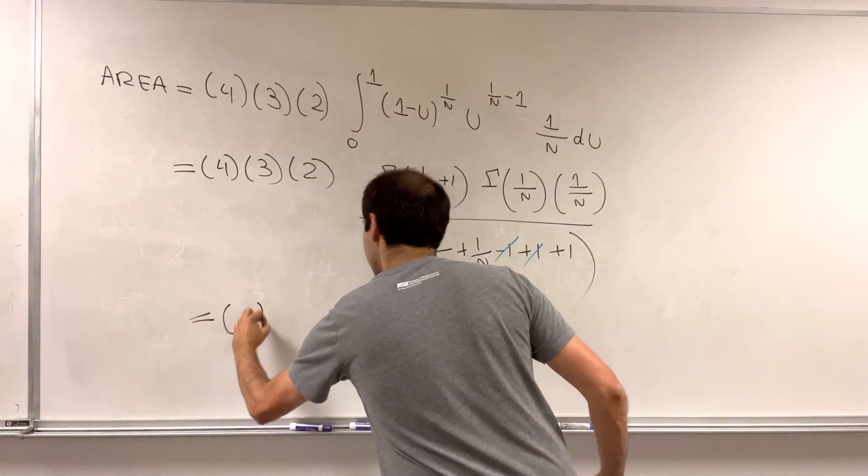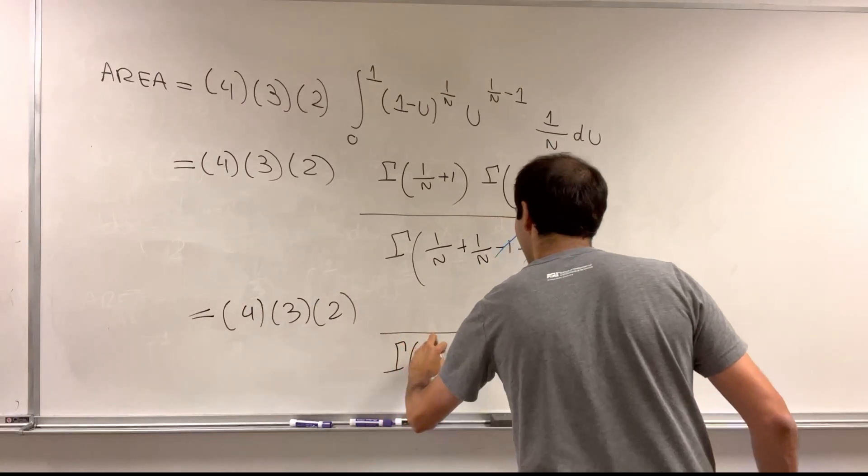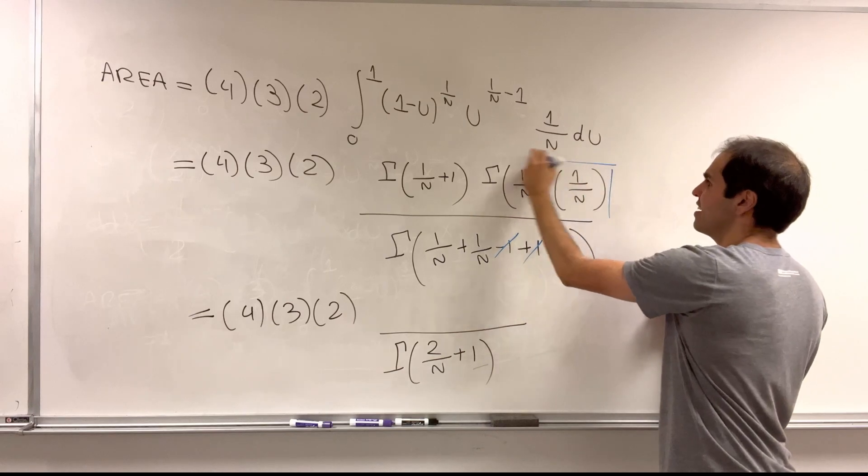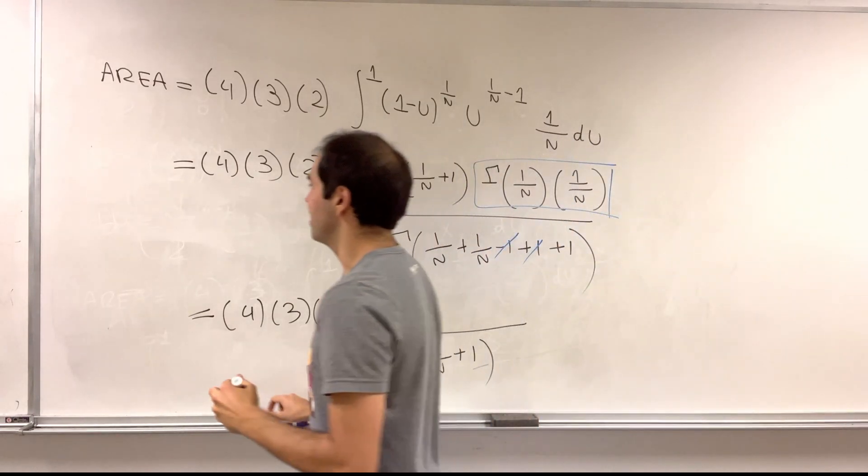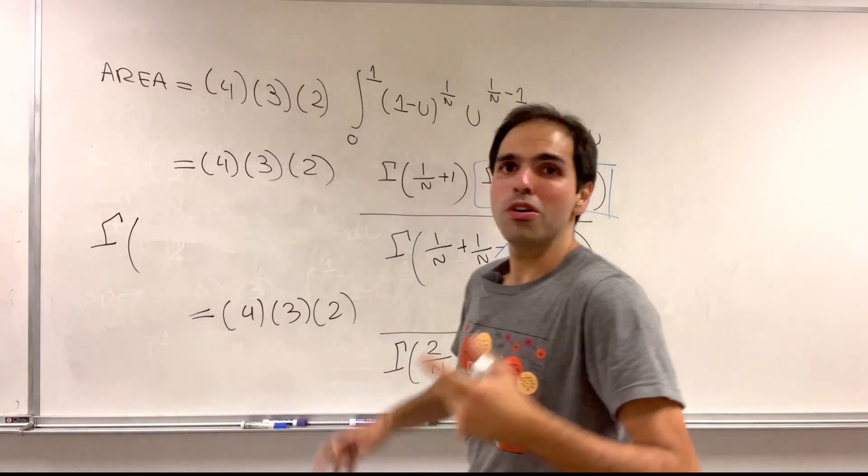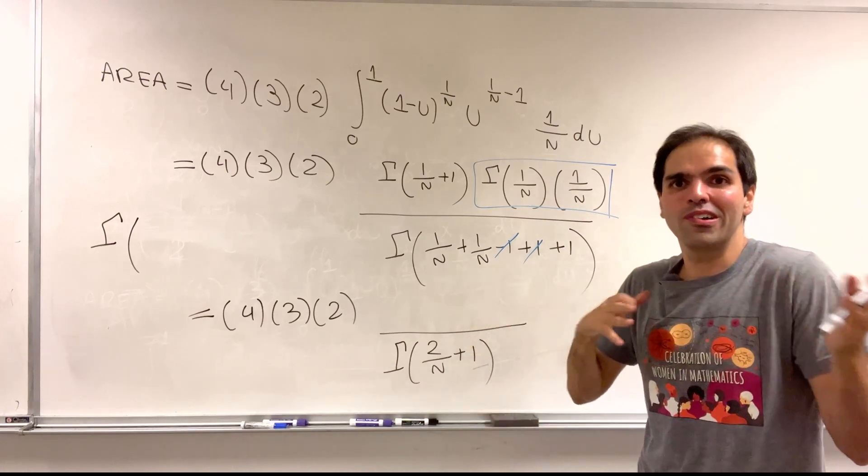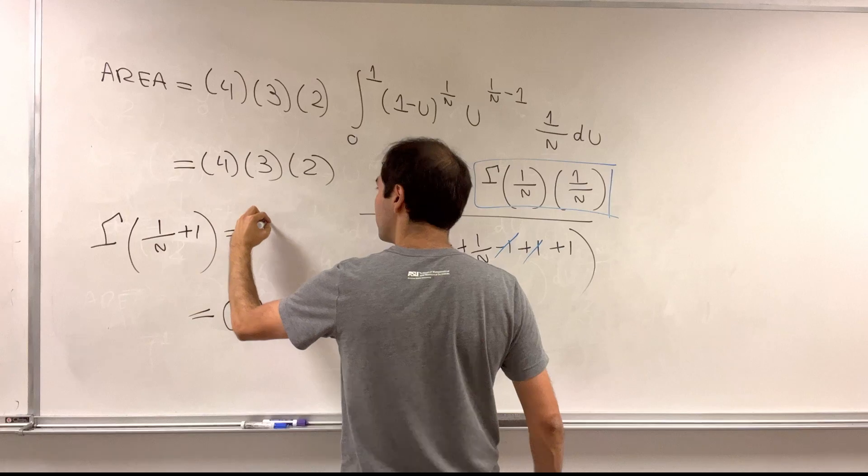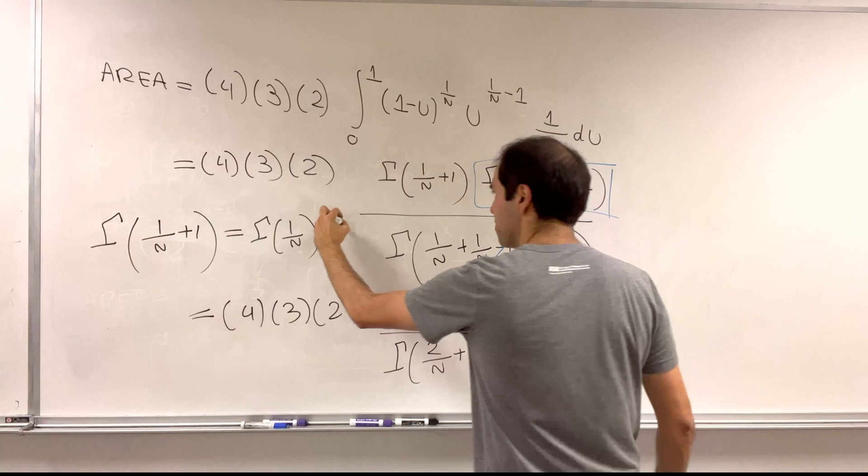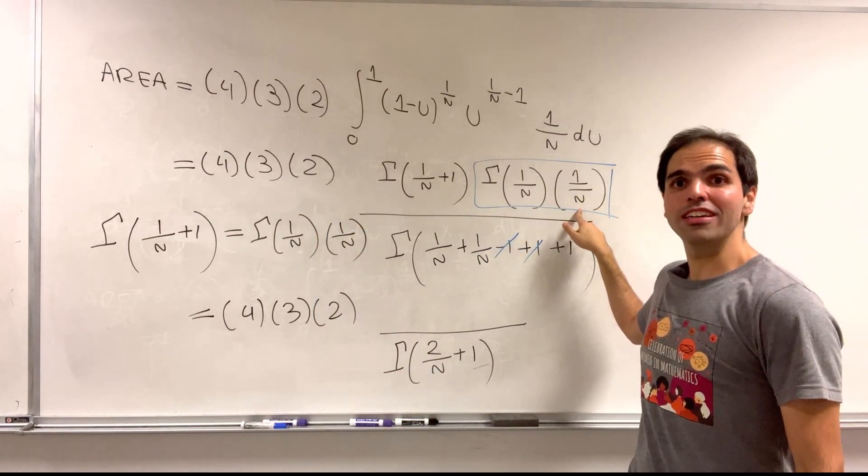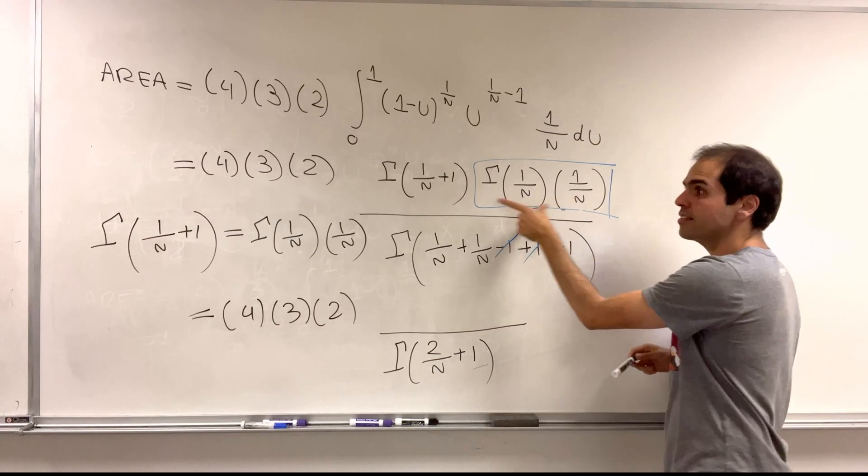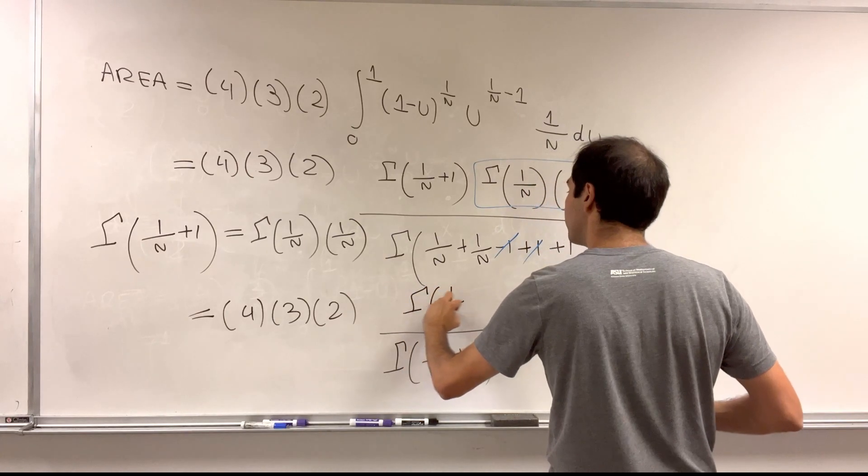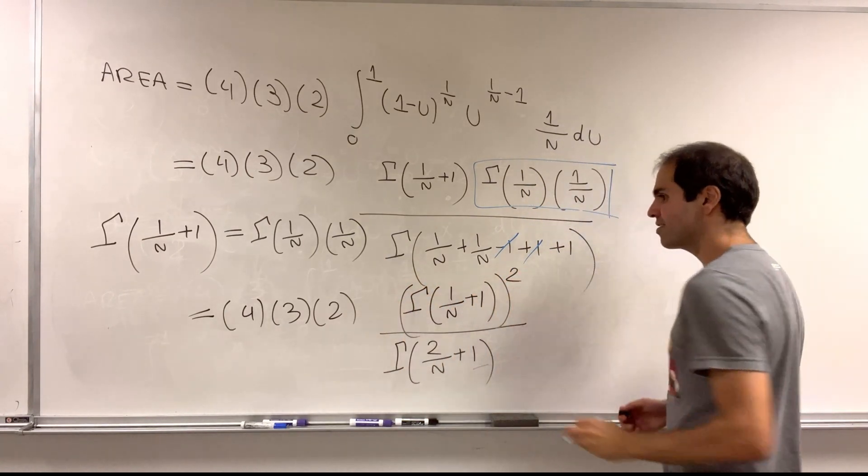So we have 4 times 3 times 2, and the denominator is gamma of 2 over n plus 1. Now for the numerator there is actually a very nice simplification. There is a formula similar to saying n plus 1 factorial is n factorial times something. Here we have gamma of 1 over n plus 1, that is the previous term, gamma of 1 over n times that term. And look, it's precisely what appears here. So this term that I boxed just becomes gamma of 1 over n plus 1 again. So in the end this becomes gamma of 1 over n plus 1 squared. Ta-da!